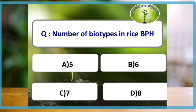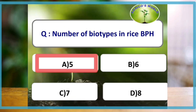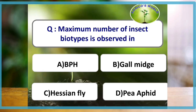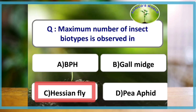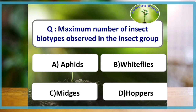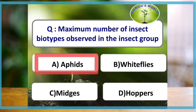In rice brown planthopper, there are five biotypes. Insects which are similar in their morphology but different physiologically are called biotypes. Maximum number of insect biotypes is observed in the Hessian fly. Maximum number of insect biotypes in the insect group is observed in aphids.